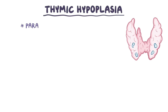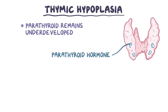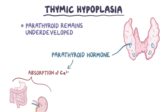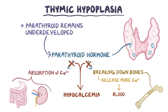The parathyroid glands also remain underdeveloped. Normally, the parathyroid secretes parathyroid hormone, which promotes the absorption of calcium in the intestines as well as kidneys while breaking down bones to release more calcium into the blood. But when the parathyroid glands are underdeveloped, there's less parathyroid hormone, which results in hypocalcemia.